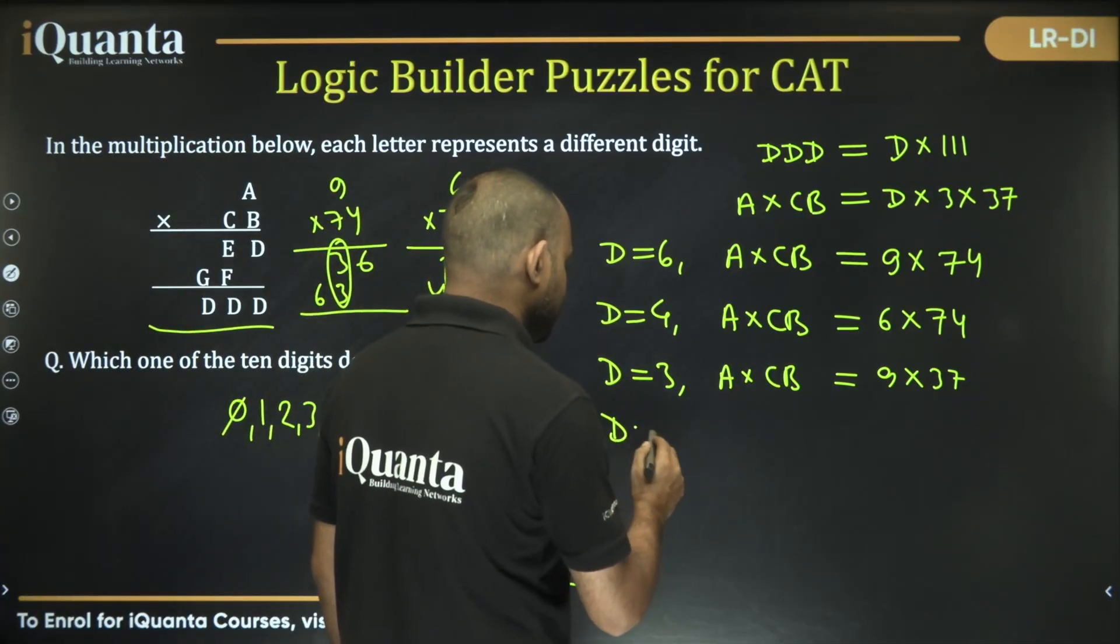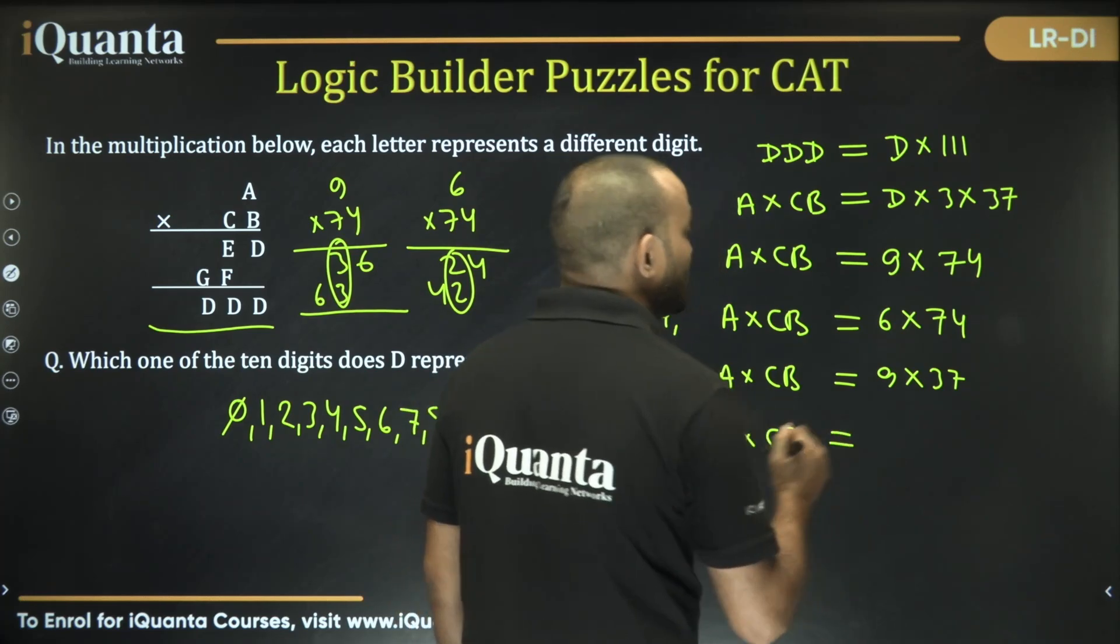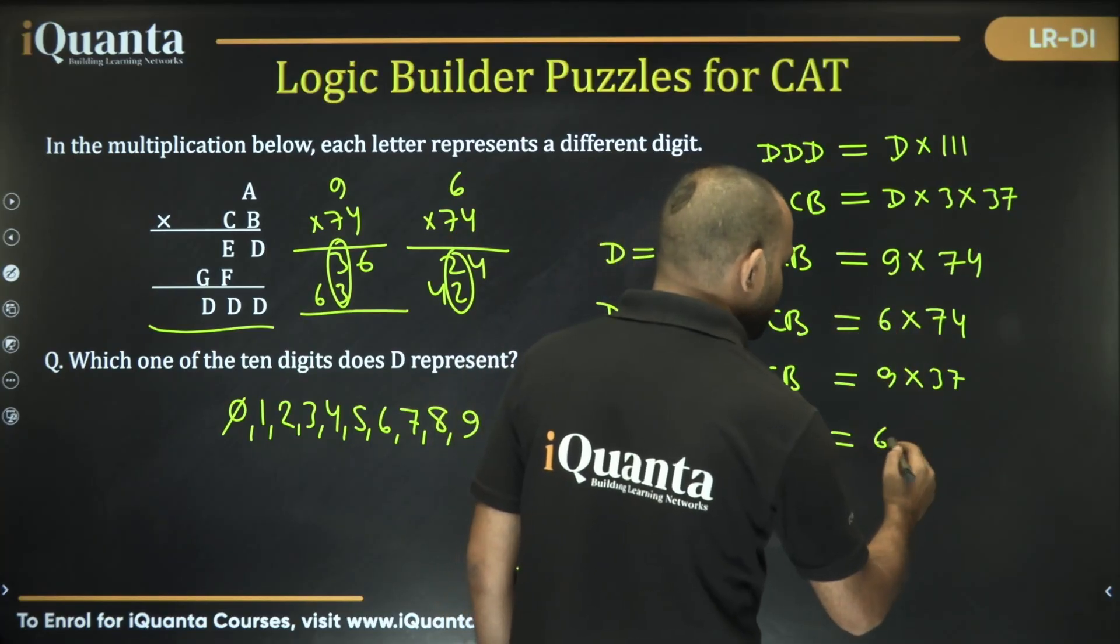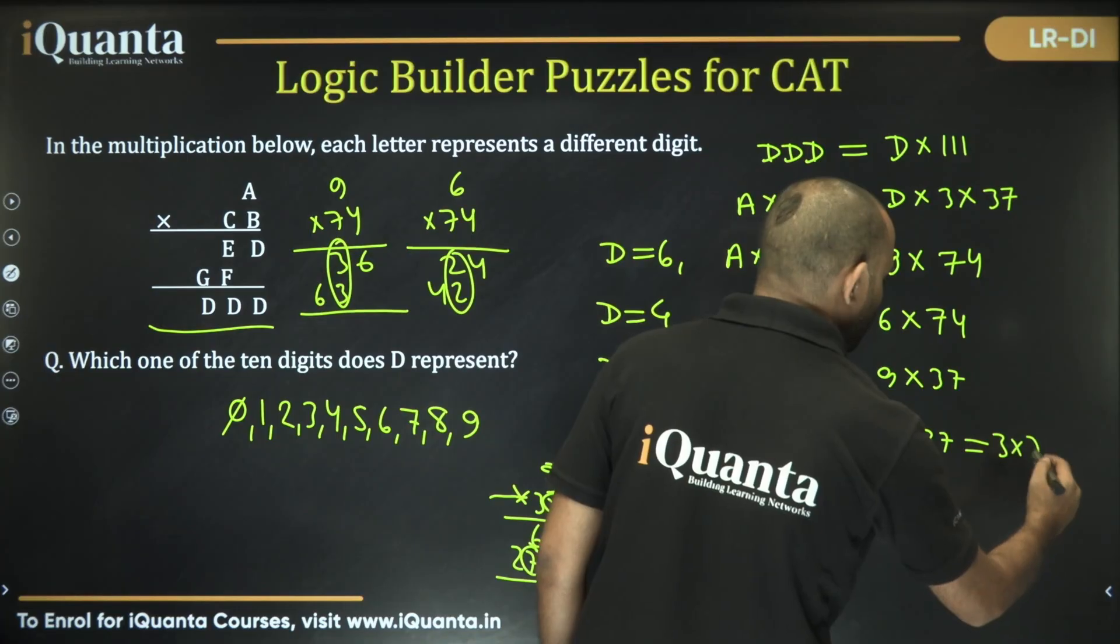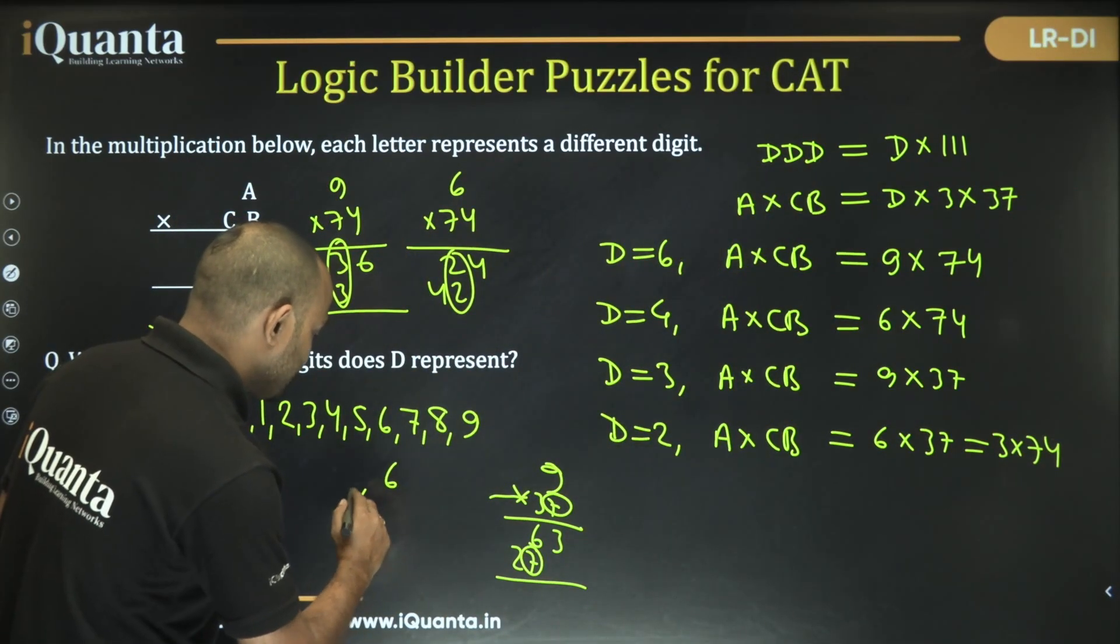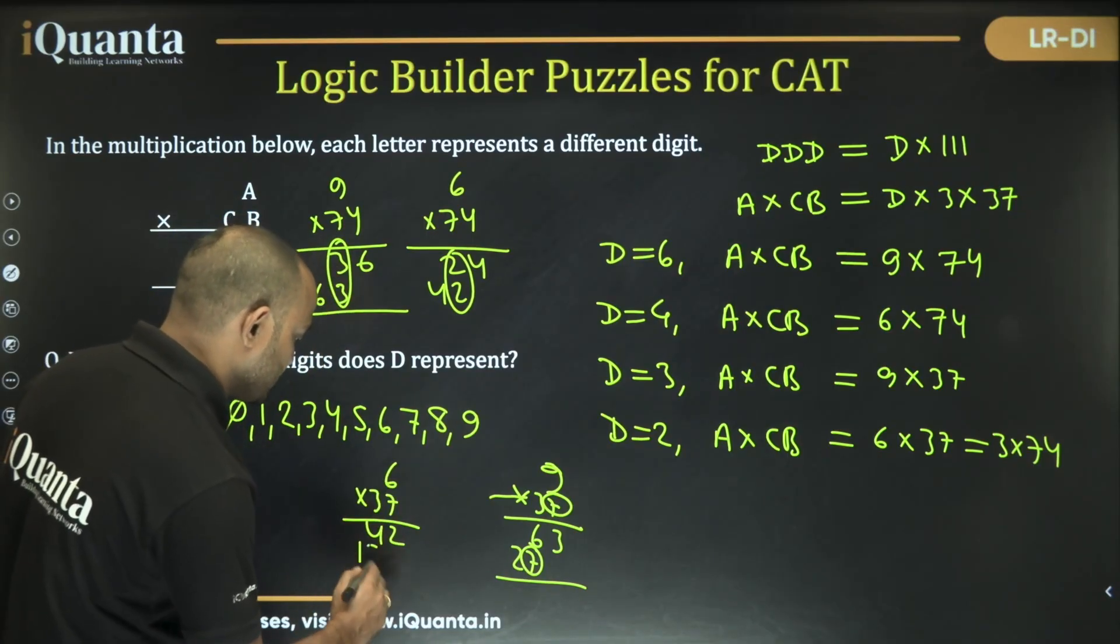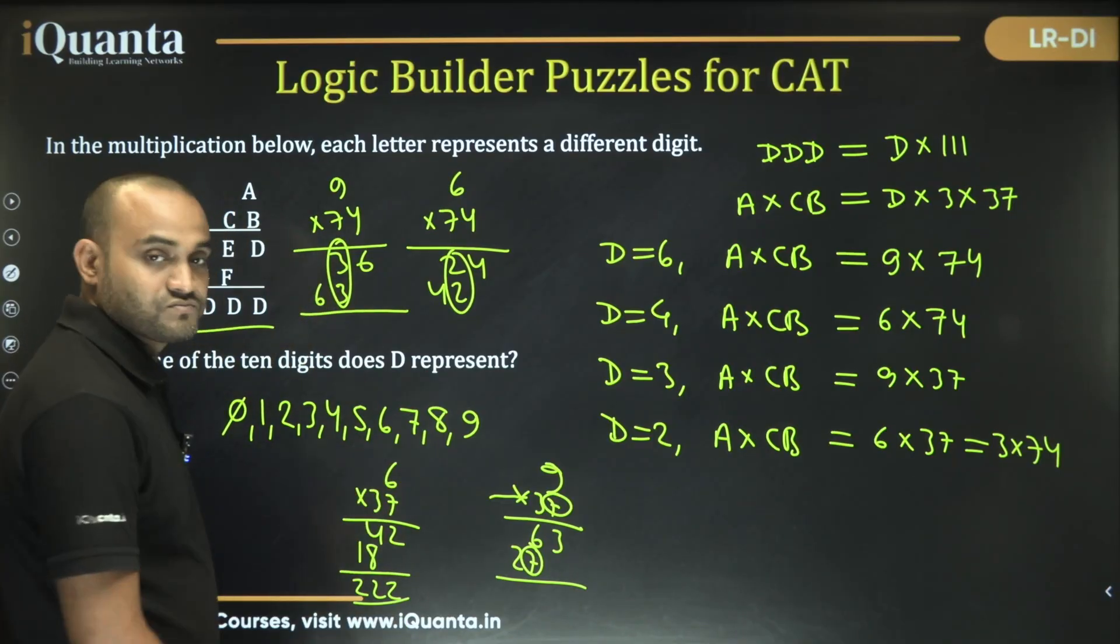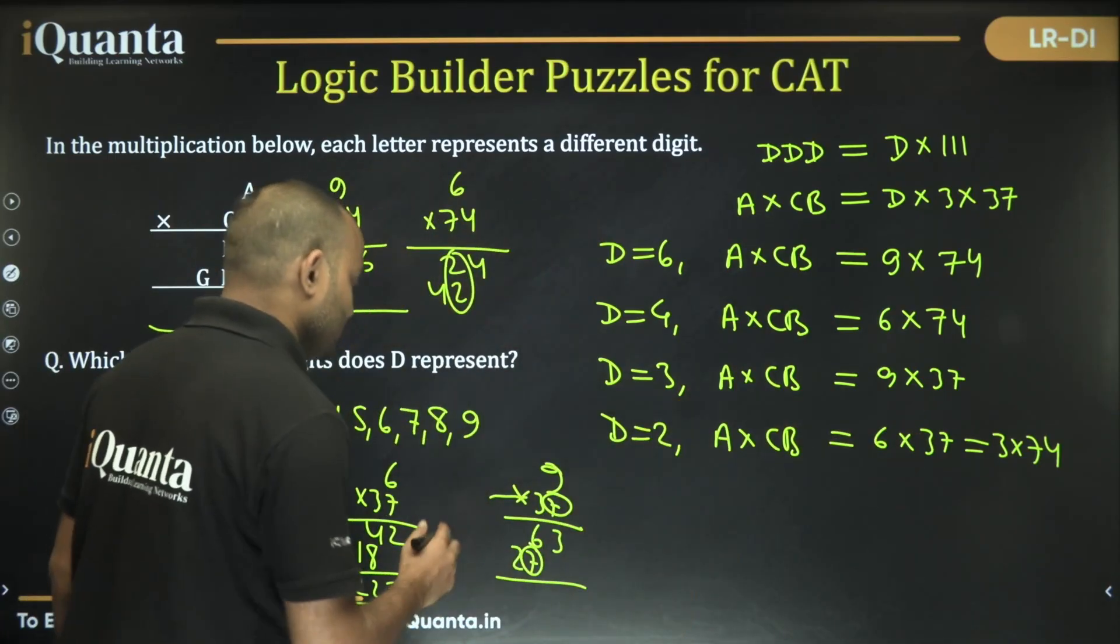Now if I am taking D is equal to 2, this could be either 6 into 37 or it could be 3 into 74. Both of these are possible. So if I am taking 6 into 37, this will become 42 and this will become 18. So 222, it works. All the digits are distinct.